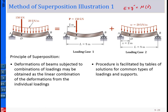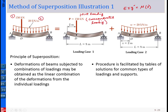Here we can see a beam simply supported at the two ends. This beam has two kinds of loading. The first kind is the 150 kilonewton point load — sometimes called the concentrated loading. The second type is the distributed loading.